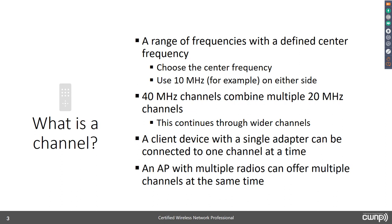A 40 MHz channel aggregates two 20 MHz channels together — not by simply taking adjacent channels like channel 1 and channel 2, but by choosing a primary channel and using the next available 20 MHz block after it. Anytime you're using something wider than 20 MHz with modern 802.11 physical layers, you must have a primary channel. This is because a client device that only supports 20 MHz still needs to communicate on that network alongside devices that can support 40 MHz.